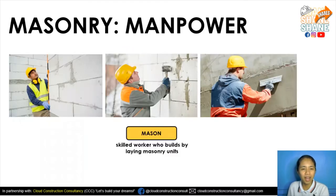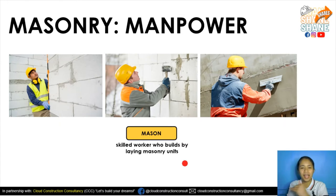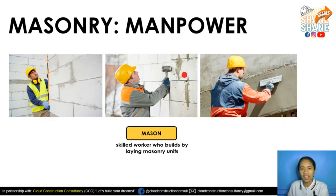For manpower, we call them a mason. The mason is the skilled worker who builds by laying masonry units — meaning they stack, pile up, connect, level, align, and then do the plastering. That is the name of the job.